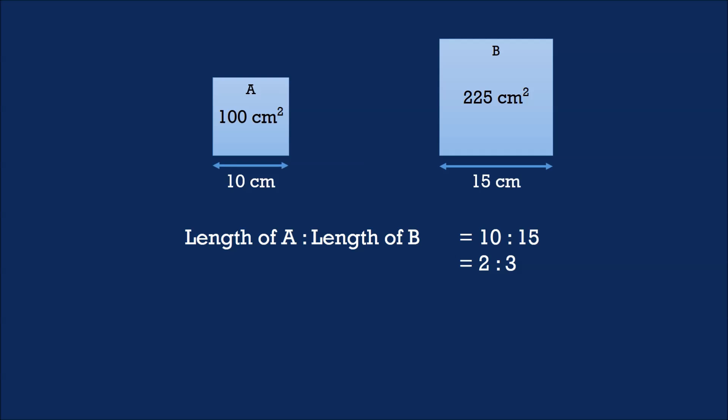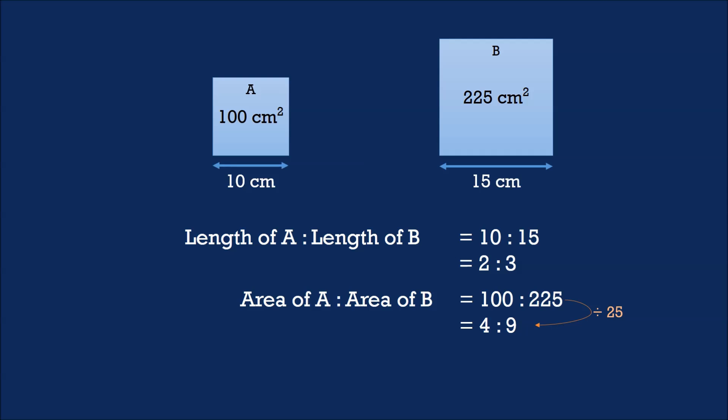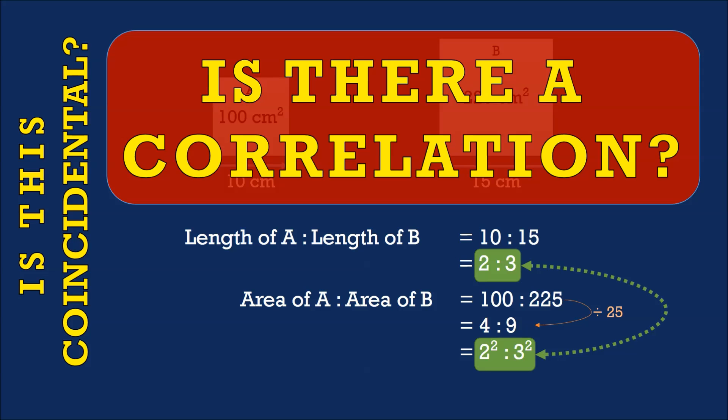How about the ratio of the areas? The ratio of area A to area B would be 100 is to 225. Simplifying by dividing by 25 on both sides gives us 4 is to 9. We can re-express this as perfect squares: 2 squared is to 3 squared. You will notice there is an interesting pattern — is this coincidental, or is there a correlation?